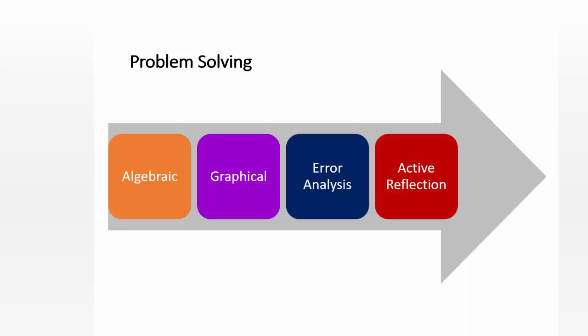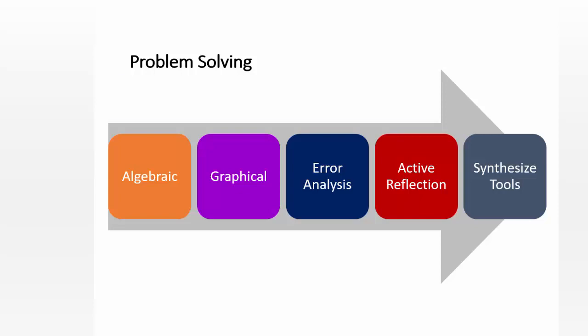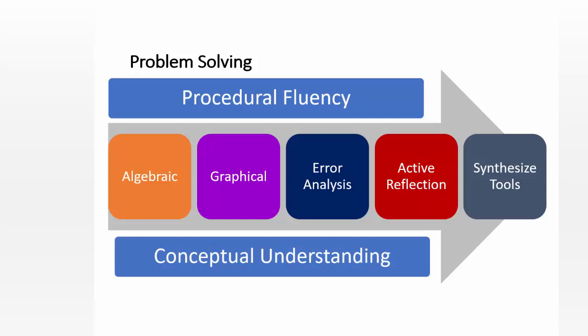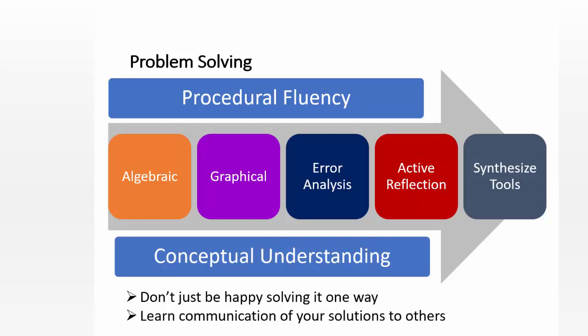This will prevent you from making the mistake again once you understand it. You have to have active reflection in order to be able to do that. The active reflection will also allow you to pull and synthesize the mathematical tools that were necessary to solve the problem. This process of problem solving will allow you to get fluency in solving mathematical problems. The procedural fluency means that you know how to execute all the different steps of a problem. But active reflection will allow you to also be able to have a conceptual understanding. And so don't just be happy solving a problem one way. Please learn to communicate your solutions to others. This is extremely important. If you can communicate the solutions to others, that means you truly understood the material.